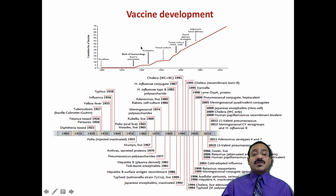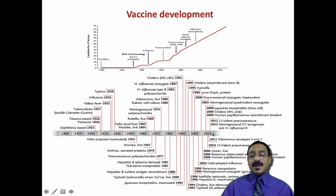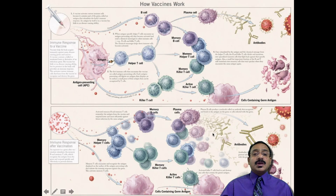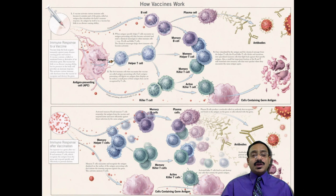Vaccine development progressed through the birth of immunology, Koch's postulates, production of anti-toxins using formaldehyde, tissue culture vaccines, recombinant vaccines, different delivery systems like nano-vaccines, and adjuvants. This overall chart shows the timeline of vaccine production. A vaccine works through two arms of the immune system: one mediated by B cells and another mediated by T cells.